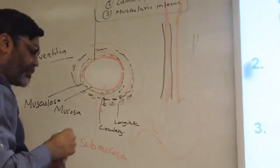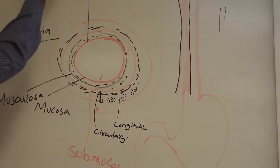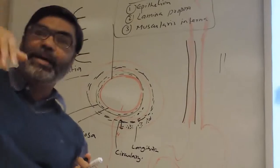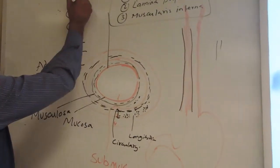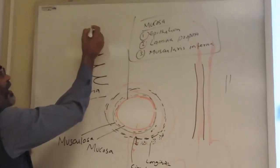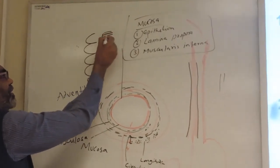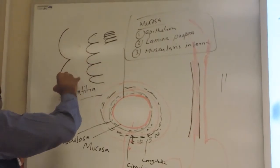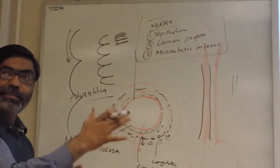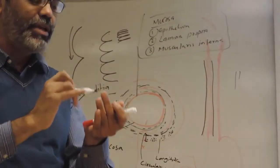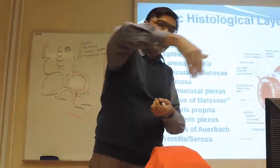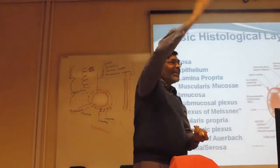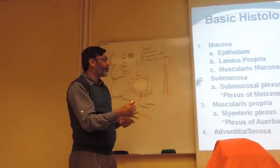Actually, the muscle is arranged in spirals. Inside, the spiral is narrow so the muscle appears to be arranged circularly. Outside, the spiral is long so the muscle appears to be arranged longitudinally. So both the inner and outer muscle arrangements are actually spirals — just different pitches.